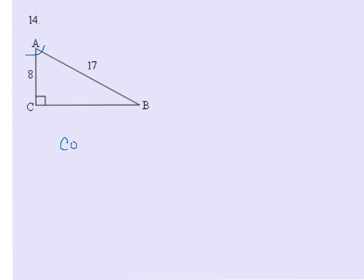I'm going to set up cosine of angle A equals adjacent, which is 8, over hypotenuse, which is 17. To solve for angle A, we use the inverse cosine of 8 over 17. We get angle A is about 61.9 degrees.